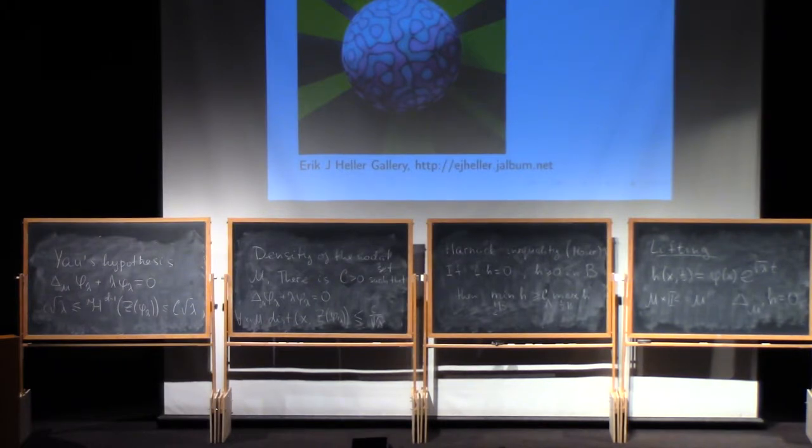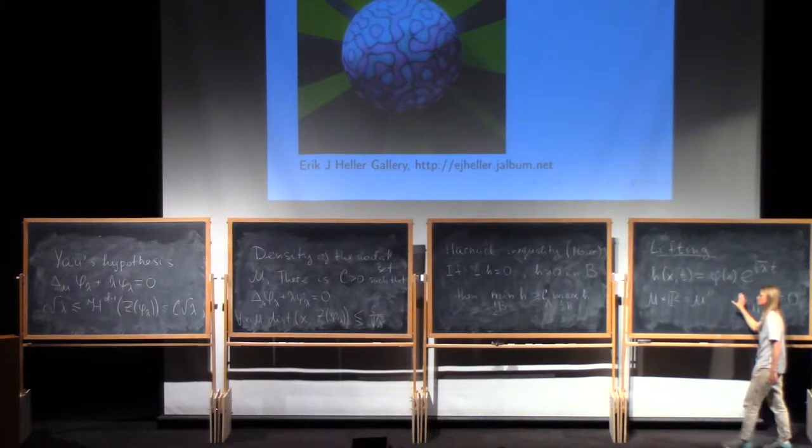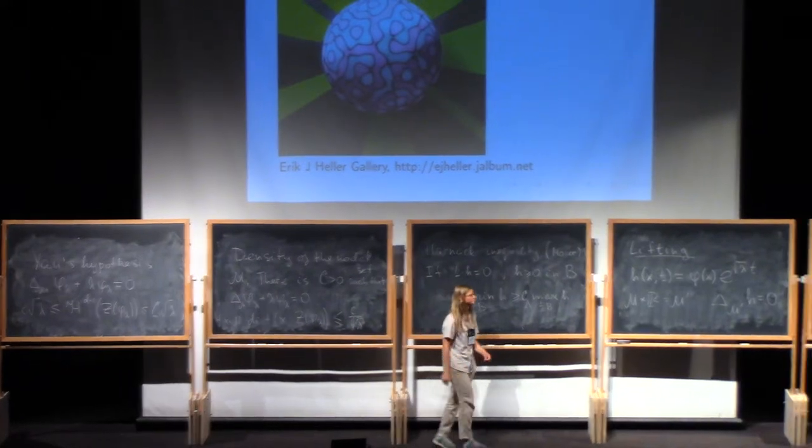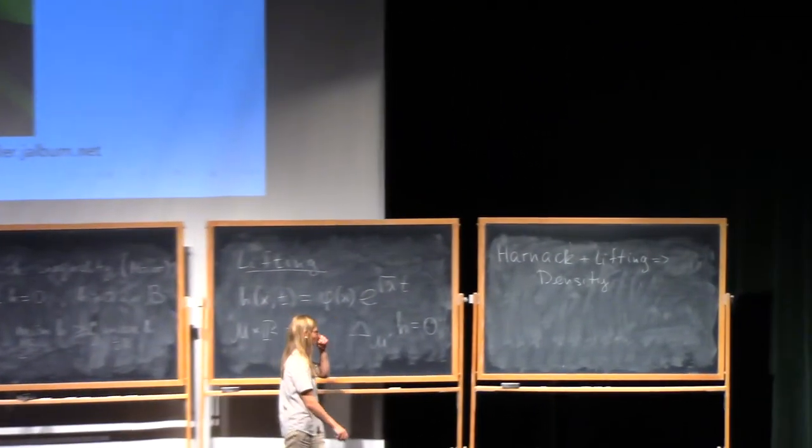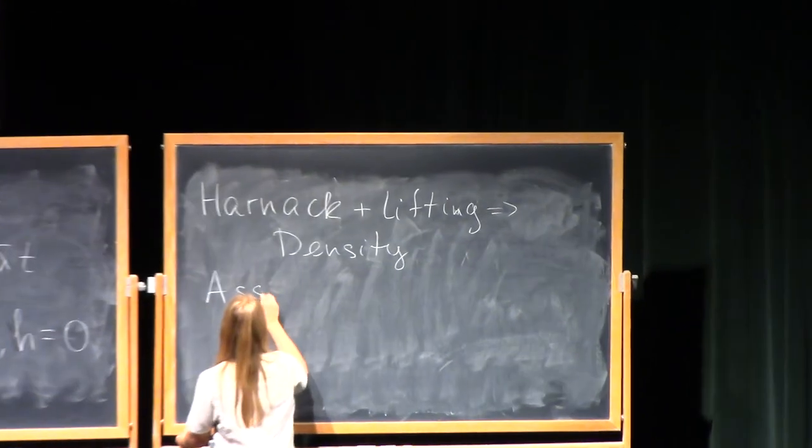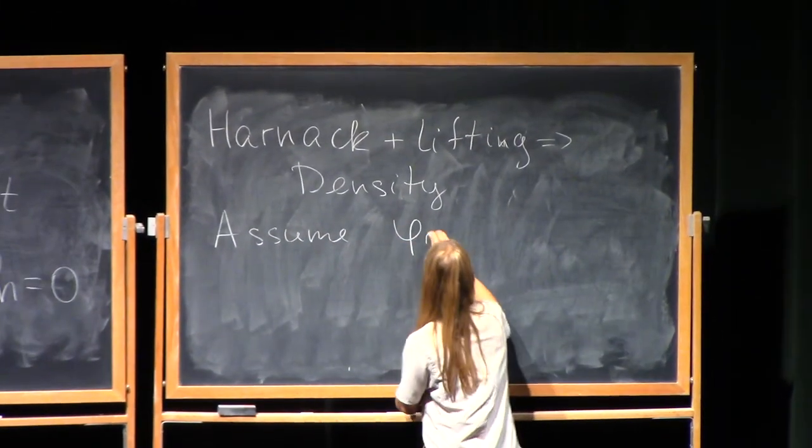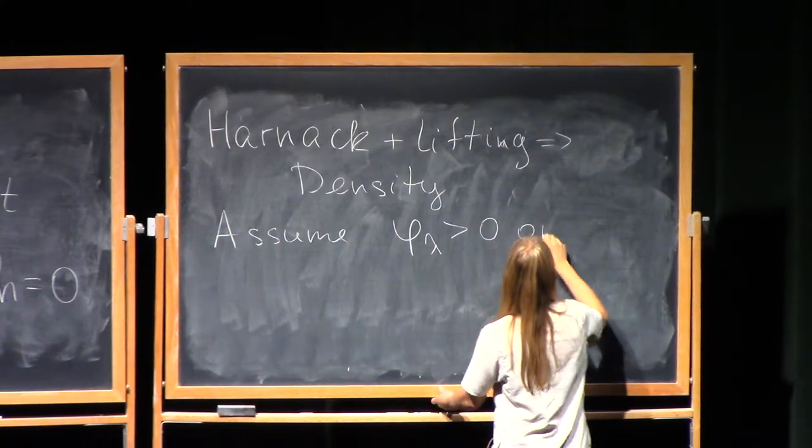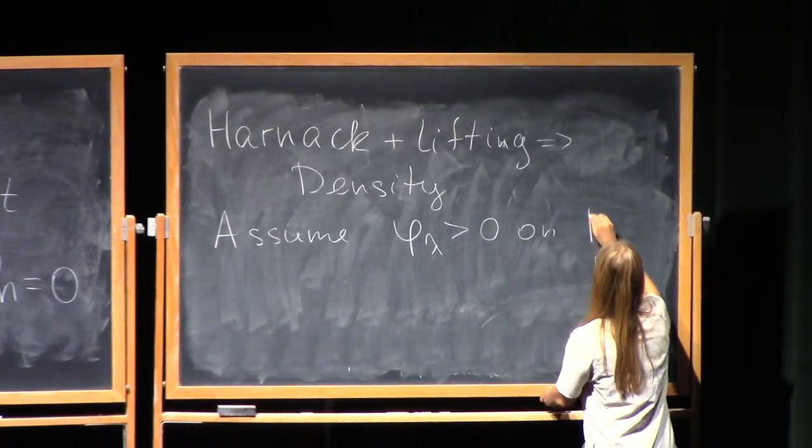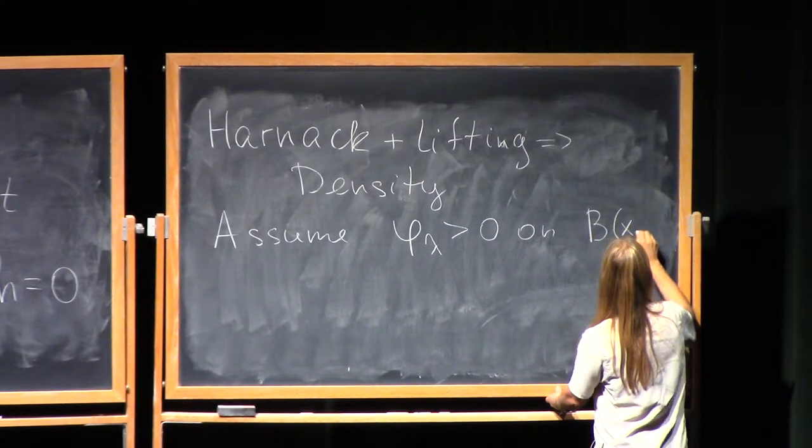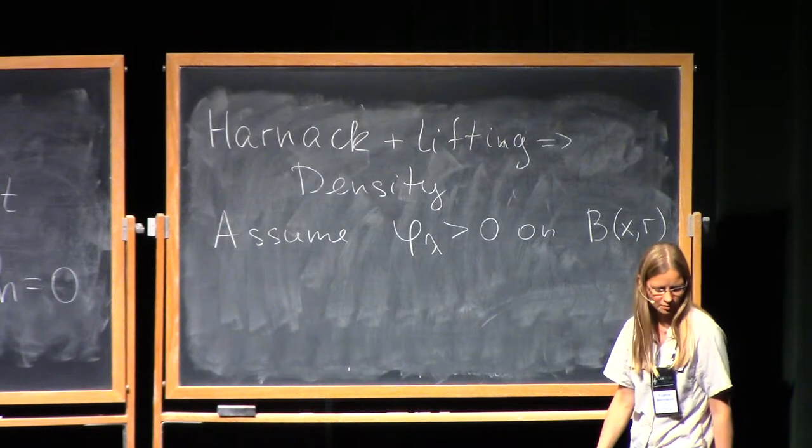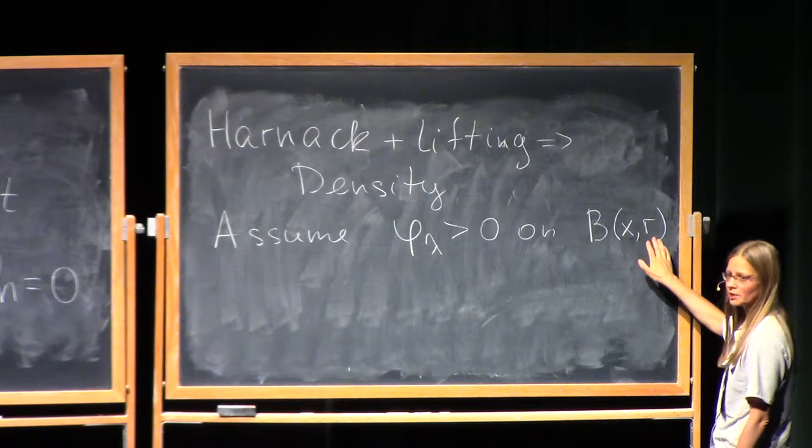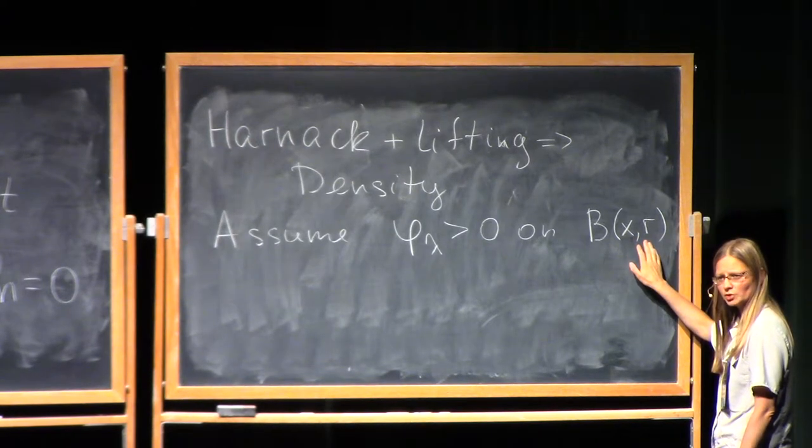And I want to explain how Harnack inequality, together with this lifting argument, gives you the result on the density of the zero set. Assume that my eigenfunction doesn't change sign. For example, it's positive on some ball of radius r.